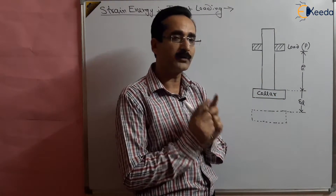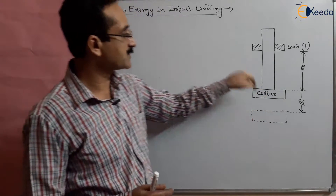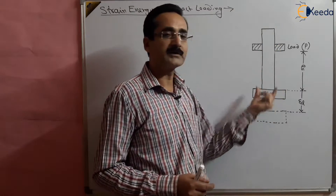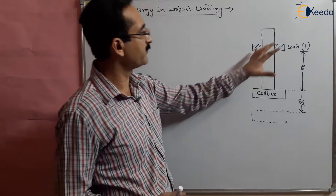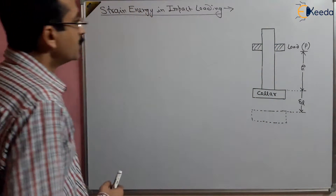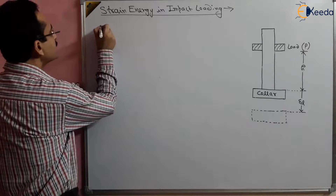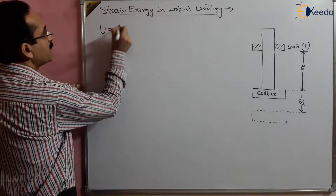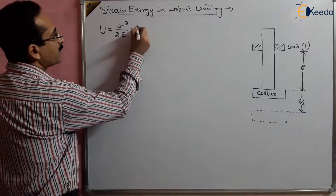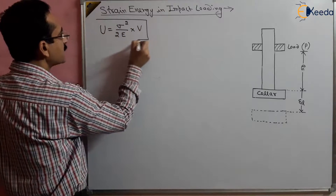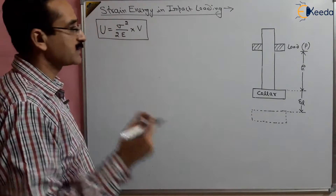The main aim is to find out the stresses, and we will apply the strain energy concept to find the stress in the bar — what is the stress developed due to that impact loading. We know that the strain energy is given by sigma squared upon 2E multiplied by the volume. This is the strain energy formula, but we are not yet aware of what the stress is.